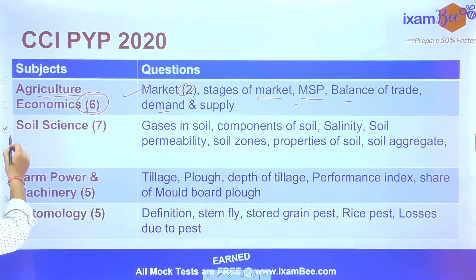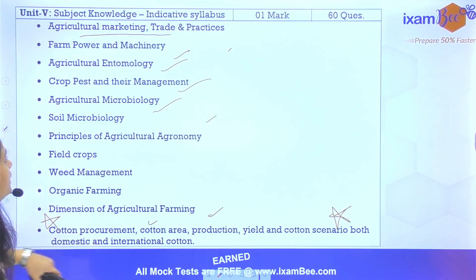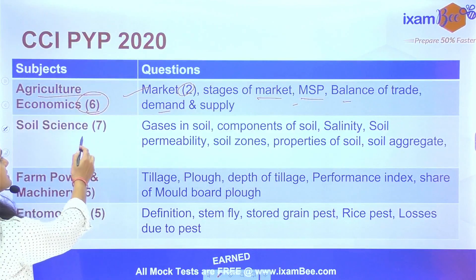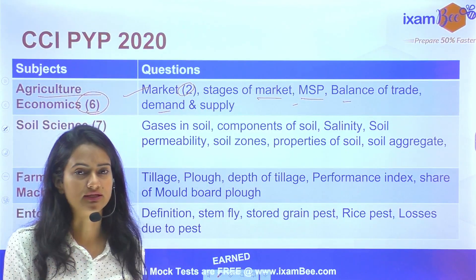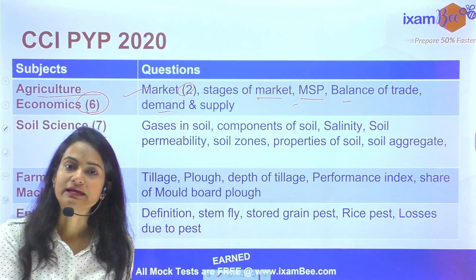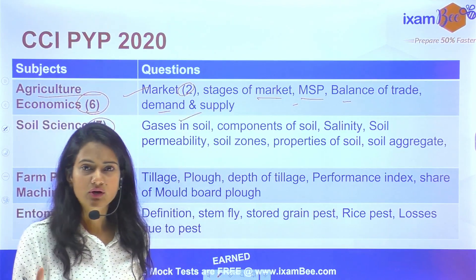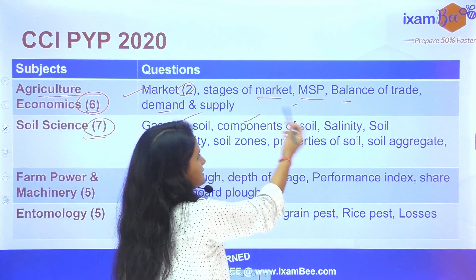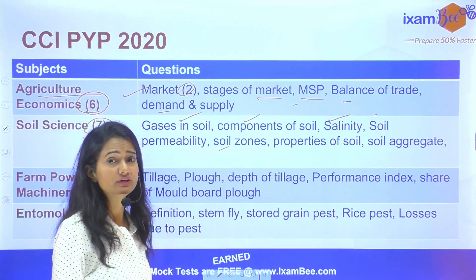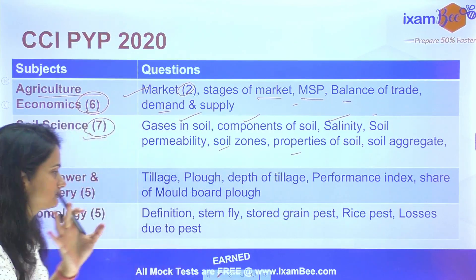Next, Soil Science. Soil science although syllabus mein alag se mentioned nahi hai — soil microbiology mentioned hai — lekin questions soil science se bhi aaye the. Toh pehle aap syllabus pe stick karenge, lekin general agriculture bhi padhna hai. Soil science se 7 questions the: gases in soil kitna amount hota hai, kaun se gases ka; components of soil se; salinity; soil permeability kya hoti hai; soil zones kitne hai all over the world; properties of soil; soil aggregate kaise banta hai, kaunsa force usme lagta hai.